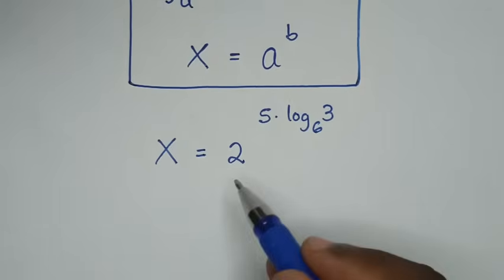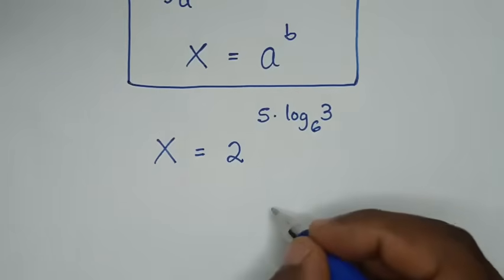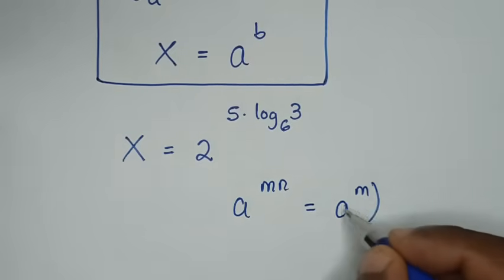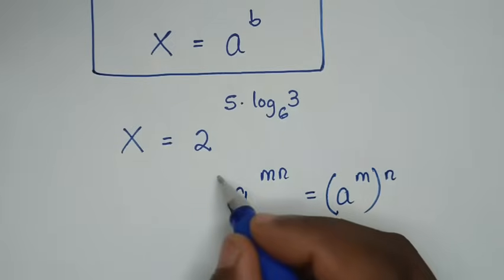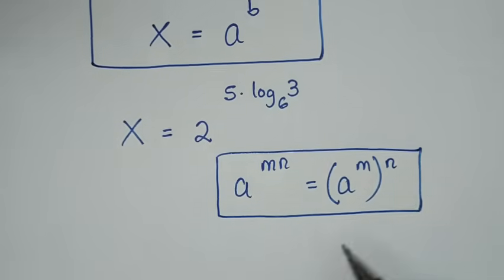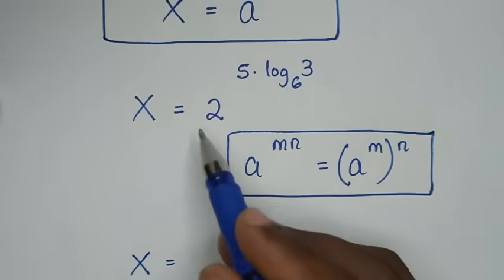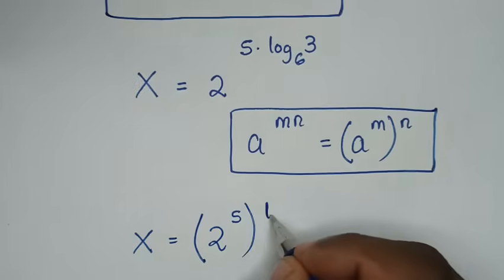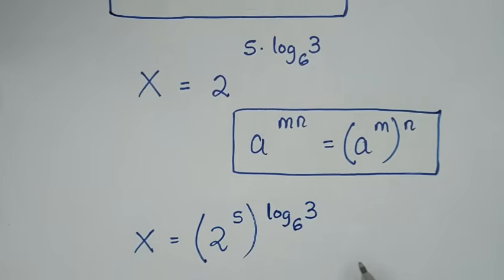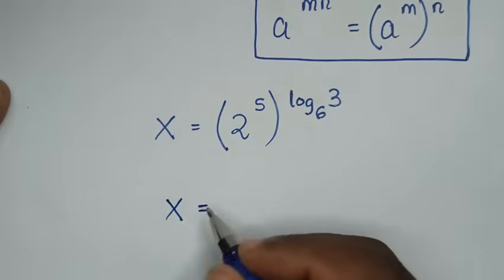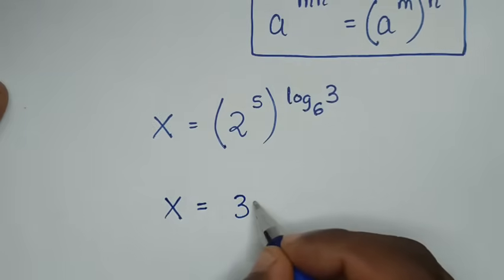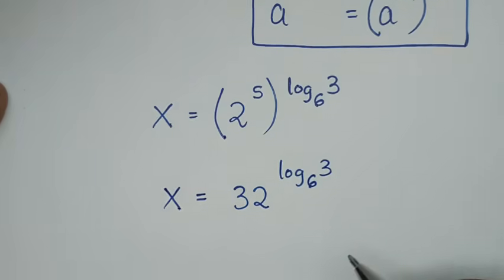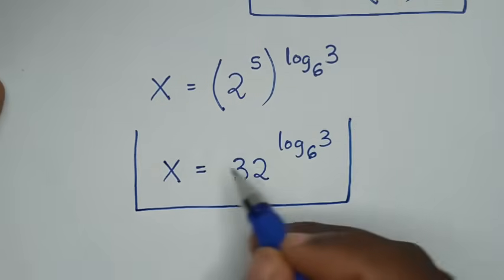Now this part is in the form of the rule a to the power of m times n, which equals a to the power of m, then that whole thing to the power of n. So x equals 2 to the power of 5, inside the bracket, times log of 3 base of 6 outside. This gives x equals 32 to the power of log of 3 base of 6. This is the final answer.